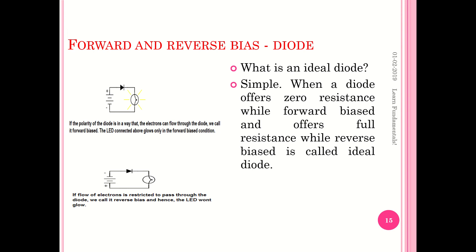Now, what is forward biased and what is reverse biased? If the polarity is in such a way that the plus is connected here and minus is connected this way, which enables electrons to flow through the diode, then we call it forward biased — only in this condition the LED will glow. When the polarity is changed, electrons would not flow and it will be restricted, hence the LED would not glow — this is called the reverse biased condition. So if it offers zero resistance when forward biased and 100% resistance when reverse biased, we call it an ideal diode. This is a very important interview question.